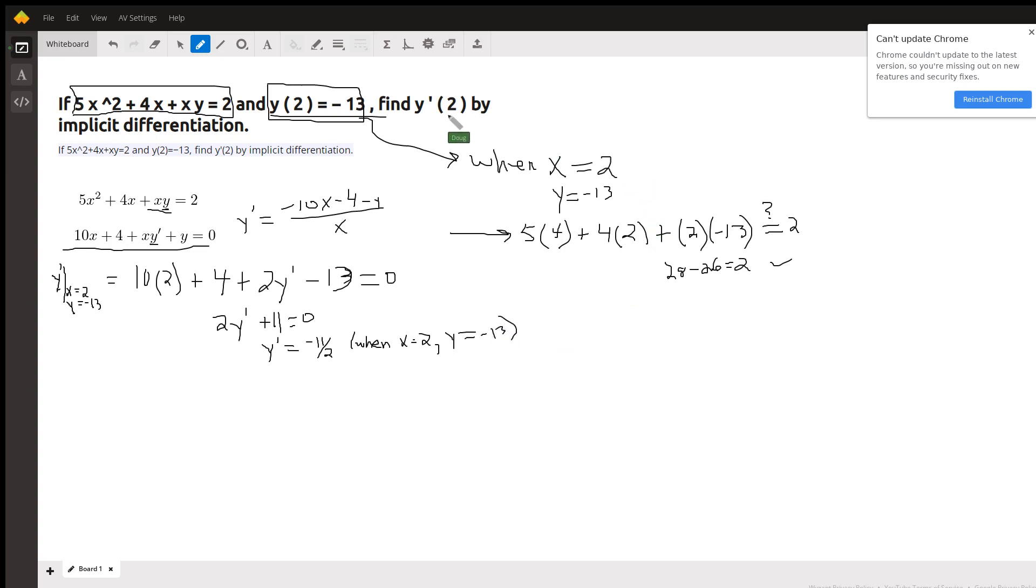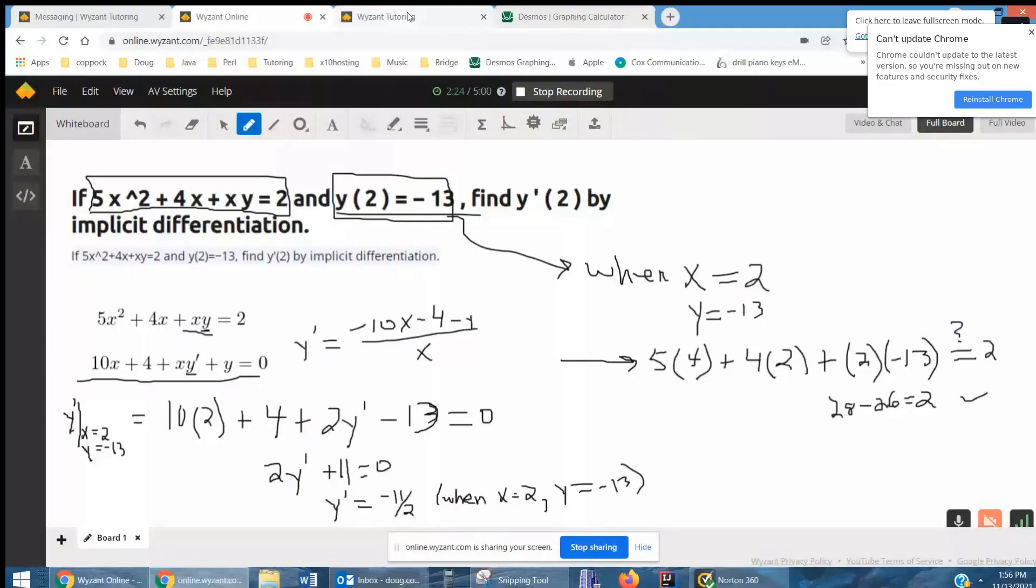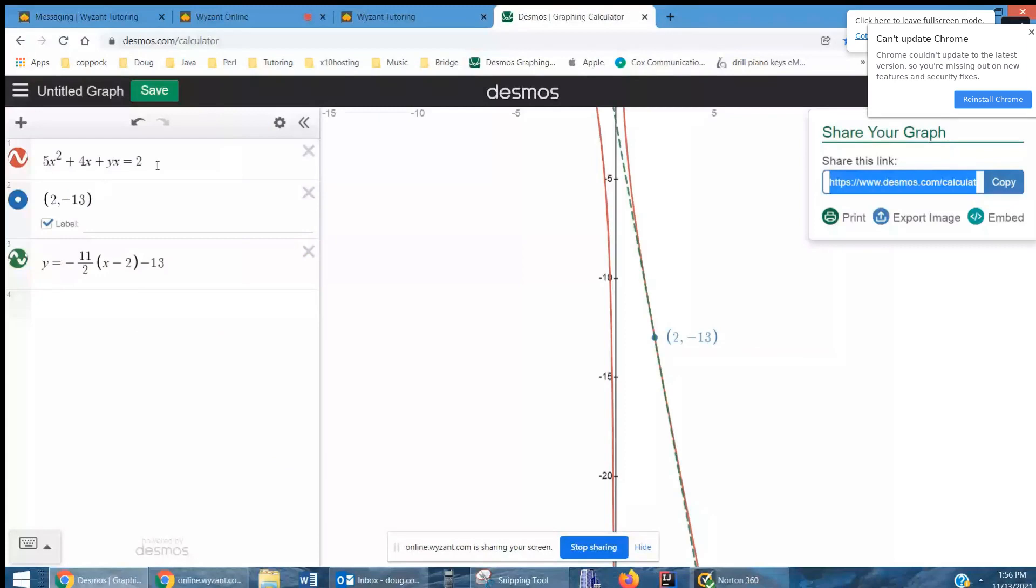Okay, and I'm going to share my screen real quickly. Let's go to Desmos. There's the implicitly defined function in red, and there's the point 2 negative 13 which is on the graph, and here's the equation of the tangent line at that point.